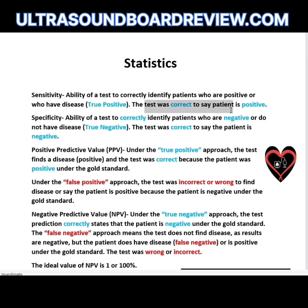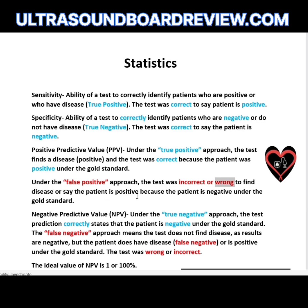So sensitivity is the ability to diagnose a patient with disease, and specificity is the ability to correctly say there is no disease — a true negative. A positive predictive value has two approaches. Under the true positive approach, the test finds disease as positive and was correct because the patient was positive under the gold standard. Under the false positive approach, the test was incorrect — the patient is actually negative under the gold standard.